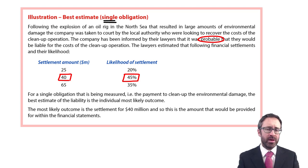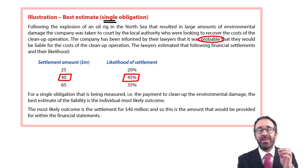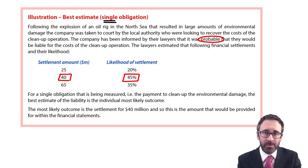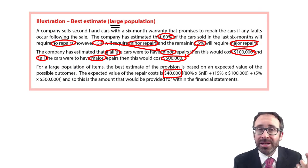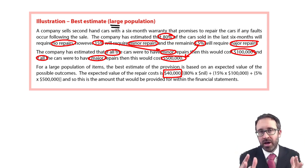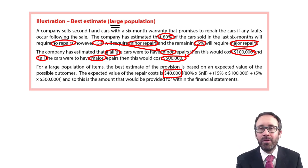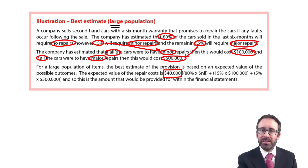In exam questions — whether published company accounts or multiple choice — you need to think carefully about your best estimate and whether it is for a single obligation, which is likely to be a court case, or whether you have a large population, which is likely to be a warranty provision. Work through the examples again, check that you're okay with it, and work an example from your study text. Promise me you won't make the mistake in the exam.